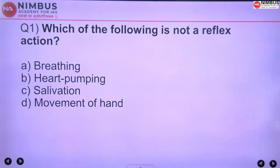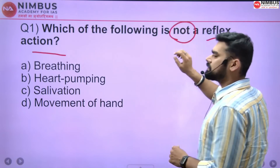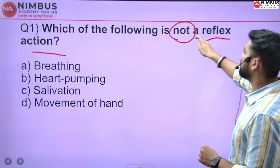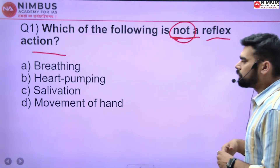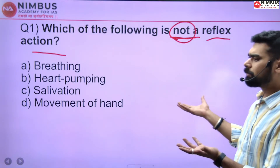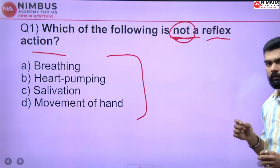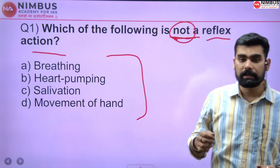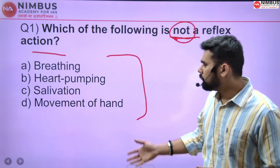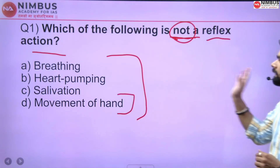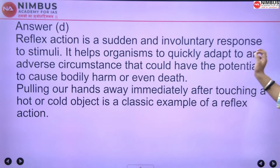Which of the following is NOT a reflex action? This is a somewhat controversial question. The fourth option — movement of hand — is a very vague term. It can be said that it is not strictly a reflex action. So the answer is option 4, movement of hand. A reflex action is a sudden and involuntary response to stimuli.